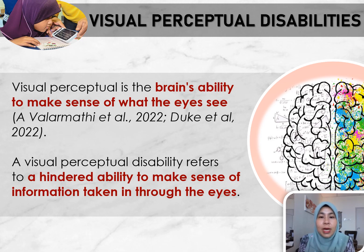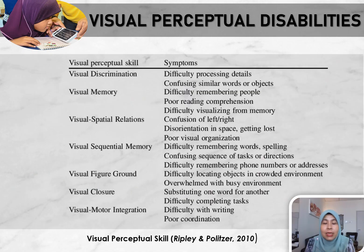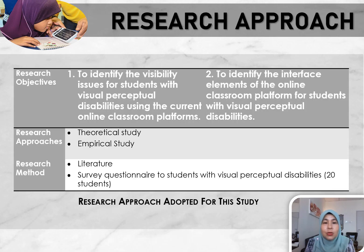Visual perception is the brain's ability to make sense of what the eyes see, as stated by R. Valamati et al. and Andrew et al. A visual perceptual disability refers to a hindered ability to make sense of information taken in through the eyes. This table shows seven classified categories of visual perceptual disabilities: visual discrimination, visual memory, visual spatial relations, visual sequential memory, visual figure ground, visual closure, and visual motor integration.